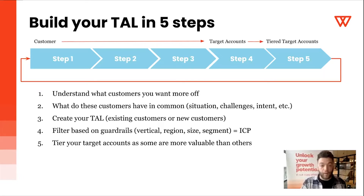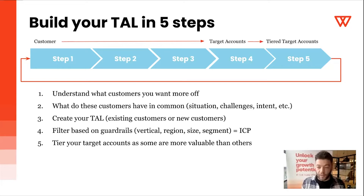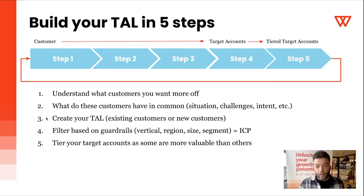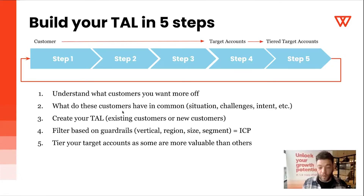Step two: identify what your best-performing customers have in common — their situation, challenges, and intent. Step three: select companies from your existing database or find new companies that fit what you identified. Step four: build a list and apply your ICP filters — vertical, company size, everything that fits your ideal client profile. That becomes your target account list.